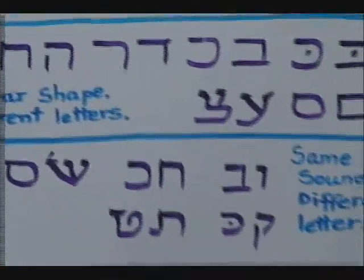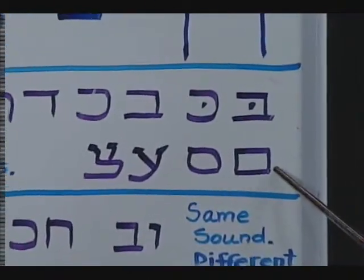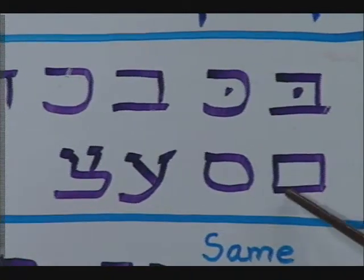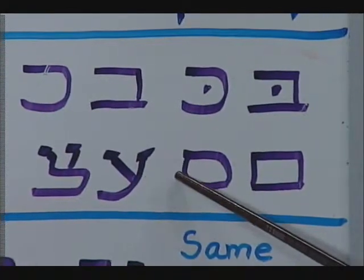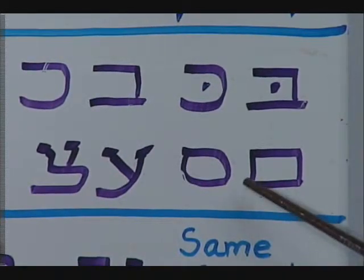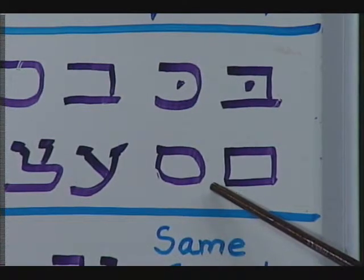We have a few more. Look over here where I am. We have the mem sofit and we have the samech. The difference is the roundedness over here where I'm pointing, and the squareness over here. One is a circle and one is a square. Very similar though.